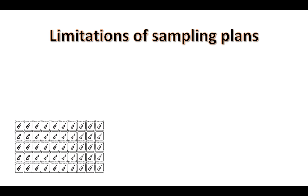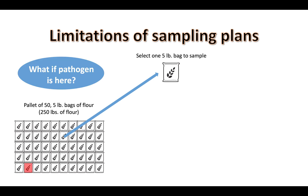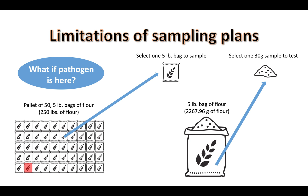In this very simple example, we are a flour producer that is doing some end product testing for E. coli O121. We are pulling a one-bag sample from each pallet we produce. Fifty five-pound bags make up a pallet. What if we have one contaminated bag, but we select one for our testing that is not contaminated? We also cannot test an entire five-pound bag for E. coli O121 — we have to take a subsample. If we select 30 grams of flour from that five-pound bag, even if we selected the contaminated bag, there is still a chance that we miss the pathogen in our subsampling.